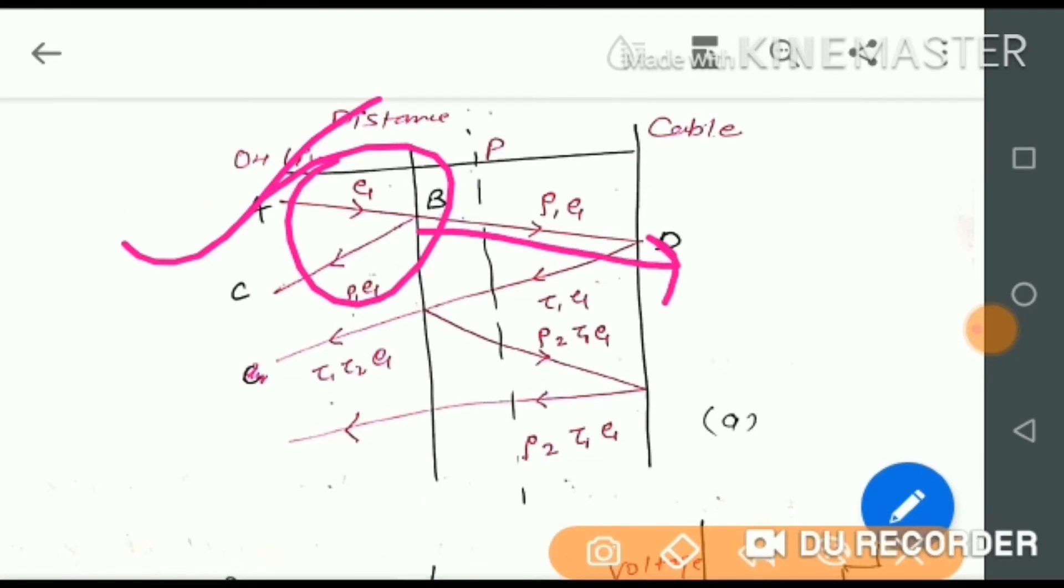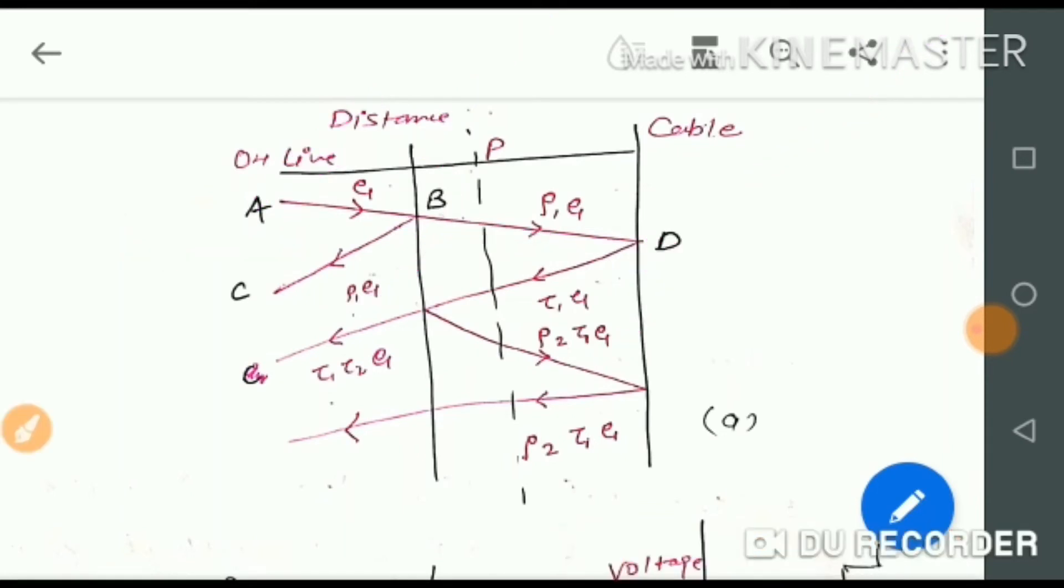This shows the line to cable reflection factor. After reflecting from here, when it comes to cable to line, the wave will be transmitted using the transmission factor τ1 and τ2.